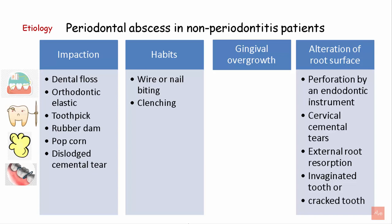Alteration of root surface — such as perforation by an endodontic instrument, cervical enamel tears, external root resorption, an invaginated tooth, or a cracked tooth — can lead to development of a periodontal abscess.